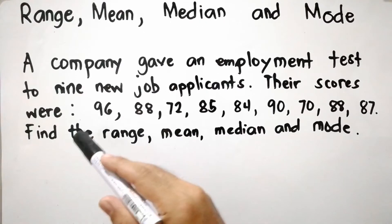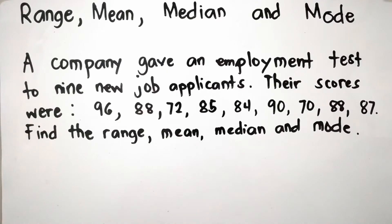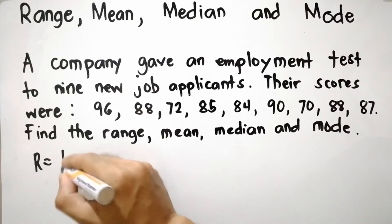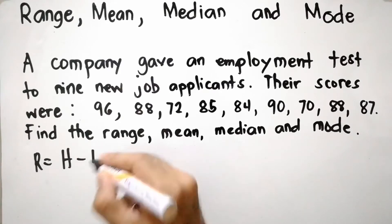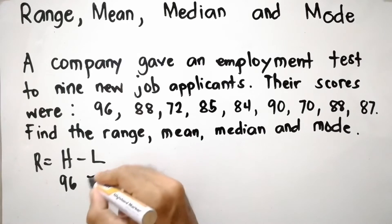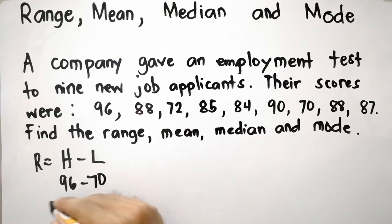First, let us find the range. Range is denoted as R which is the difference between the highest and the lowest score. So highest score is 96 and the lowest score is 70. So 96 minus 70, that is equal to 26.